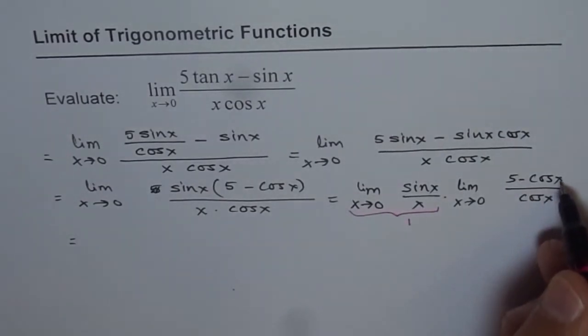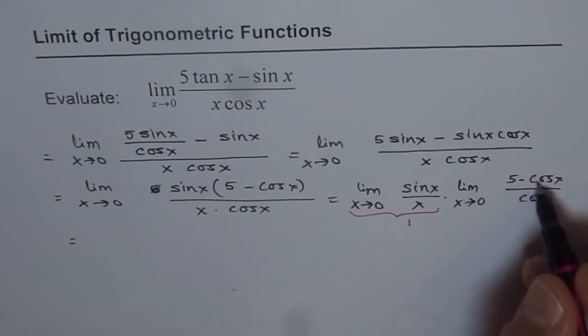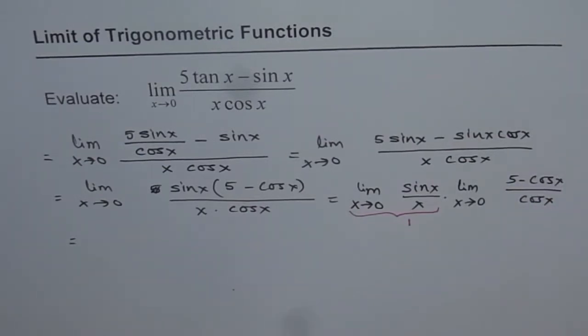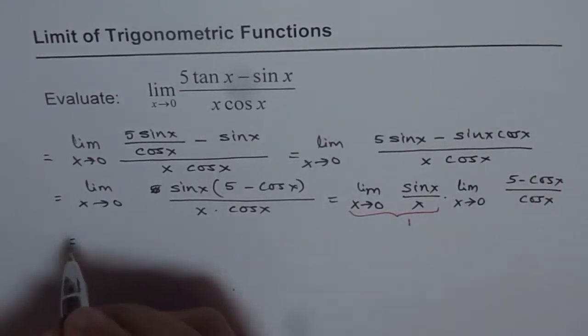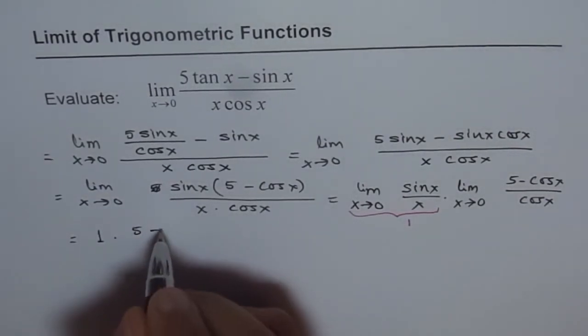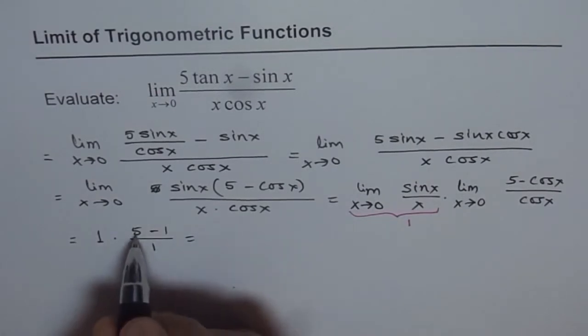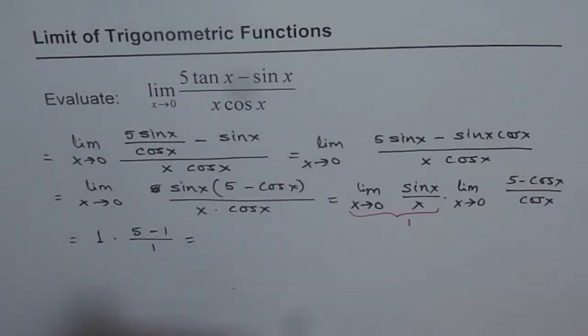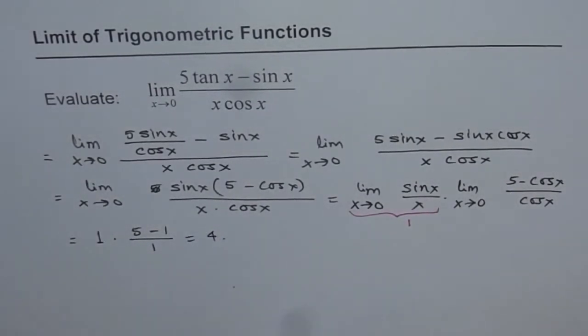And how about this? Substitute 0 here. So cos of 0 is 1. So (5 - 1) over 1. Let's write it down. So we get 1 times (5 - 1) over 1, which is (5 - 1) is 4. 4 divided by 1 is 4. So we get 4 as our answer. So the answer for this is 4.